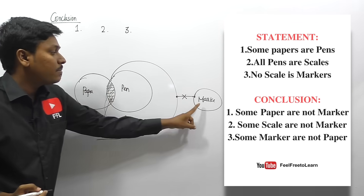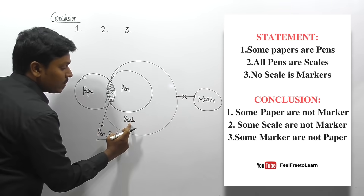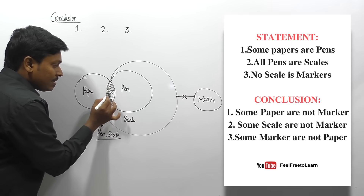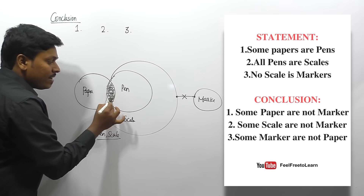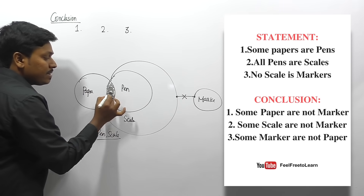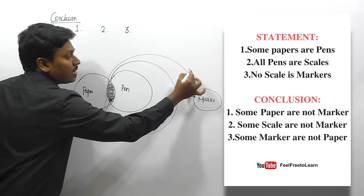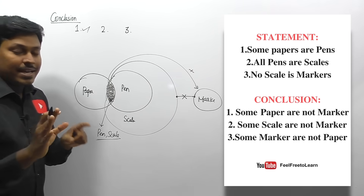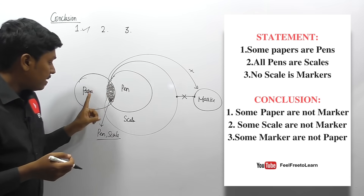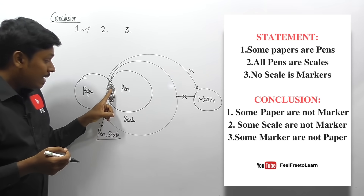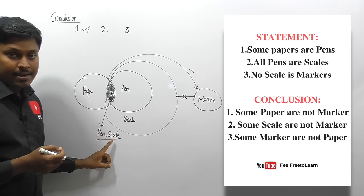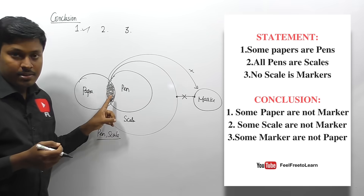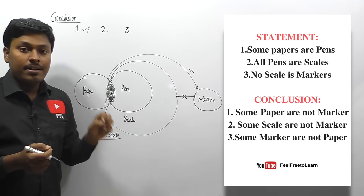In that region, we can surely say some paper is not marker. This is correct because we already know no scale is marker — there is no connection between scale and marker. So this region will have some scales, and therefore some paper (this region) is not marker is correct. Conclusion one is true.